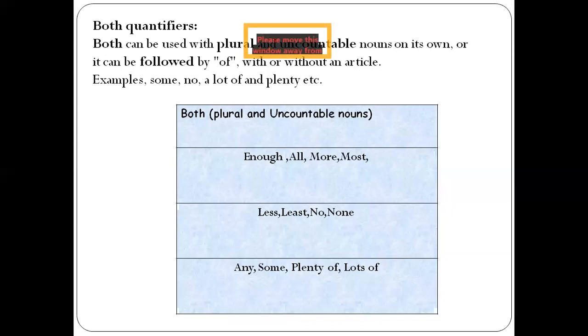And look, all of you please. I'm pointing to all of you. So maybe 51 students are here, 60 are here, 70 are here. I'm using for all. More, most, less, please, no, none, any, some, plenty of, lots of. These are the quantifiers which we can use for both quantifiers.